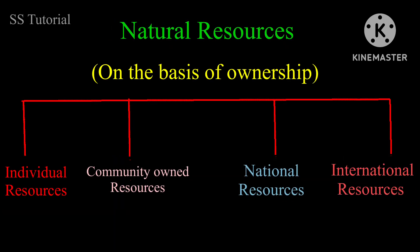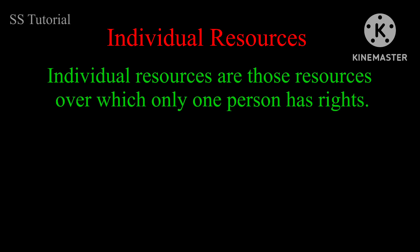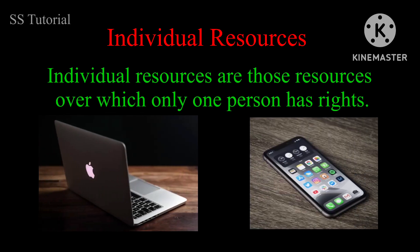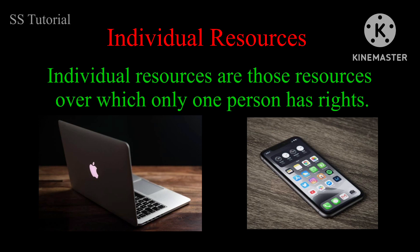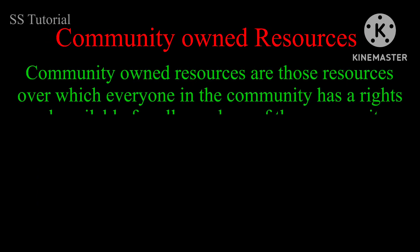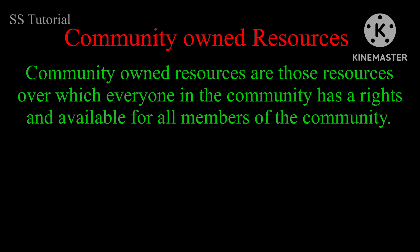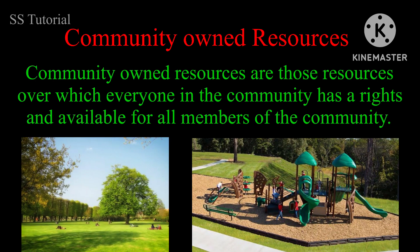On the basis of ownership, resources can be classified into four types: individual resources, community-owned resources, national resources, and international resources. Individual resources are those over which only one person has rights, like your laptop or your phone. Community-owned resources are those over which everyone in the community has rights and are available to all members, such as public parks and public playgrounds.